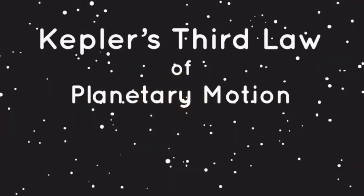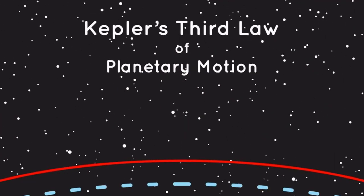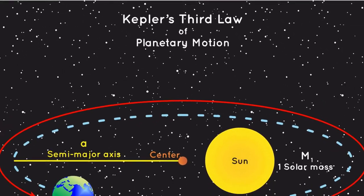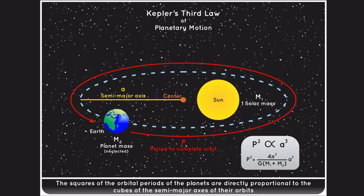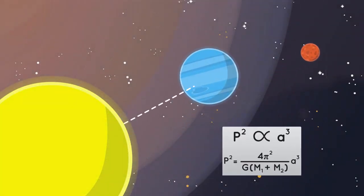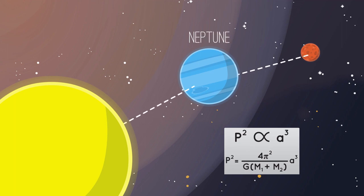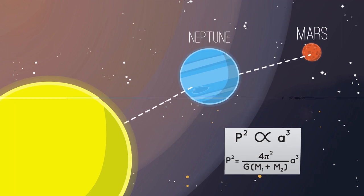Kepler's third law, the Law of Harmonies, establishes a relationship between a planet's orbital period and its average distance from the Sun. This law demonstrates that the square of a planet's orbital period is proportional to the cube of its average distance from the Sun.